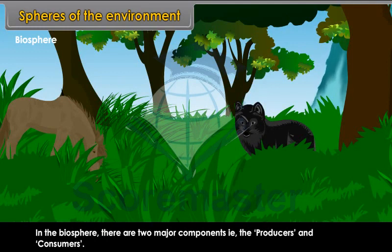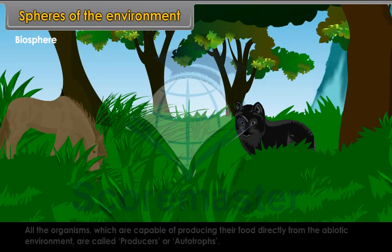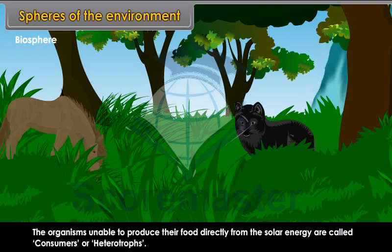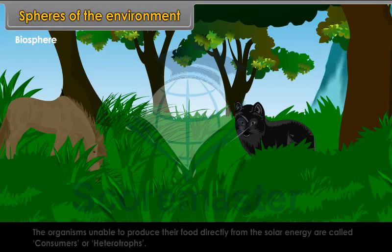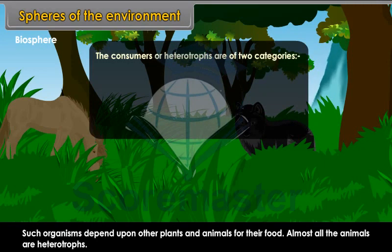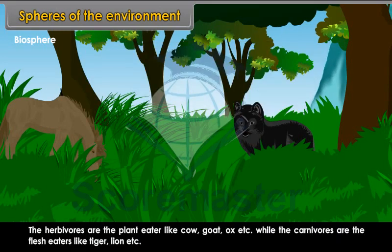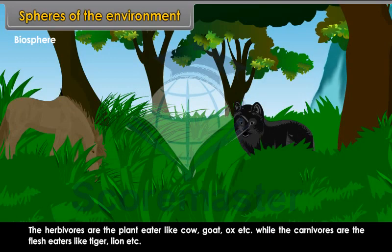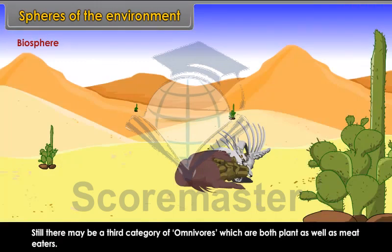All organisms capable of producing their food directly from the abiotic environment are called producers or autotrophs. Organisms unable to produce their food directly from solar energy are called consumers or heterotrophs; they depend upon other plants and animals for food. Almost all animals are heterotrophs. Consumers or heterotrophs are of two categories: herbivores and carnivores. Herbivores are plant eaters like cow, goat, ox, etc., while carnivores are flesh eaters like tiger, lion, etc. There may also be a third category of omnivores, which are both plant and meat eaters.